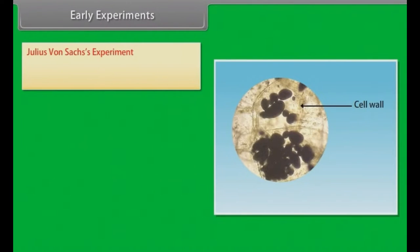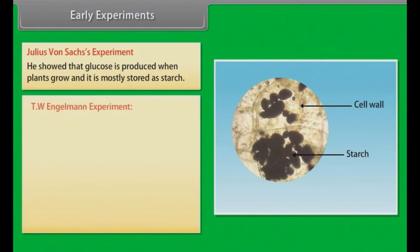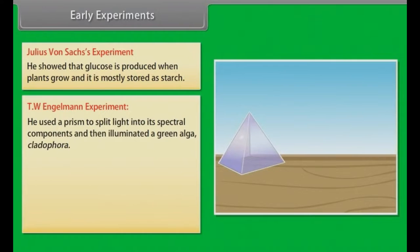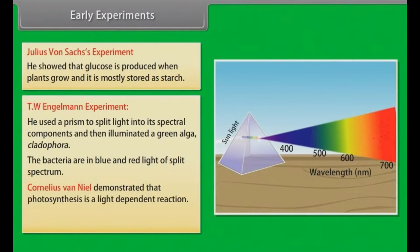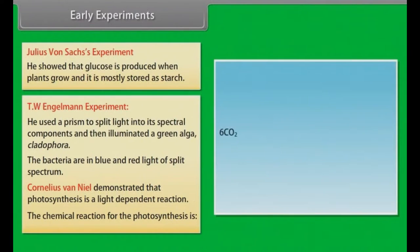Early Experiments: Julius Von Sachs showed that glucose is produced when plants grow and it is mostly stored as starch. T.W. Engelmann used a prism to split light into its spectral components and then illuminated a green alga, Cladophora. The bacteria are in blue and red light of split spectrum. Cornelius Van Niel demonstrated that photosynthesis is a light-dependent reaction. The chemical reaction for photosynthesis is 6CO2 with 12H2O in presence of light gives C6H12O6, which is glucose, with 6H2O, water, and 6O2, oxygen.